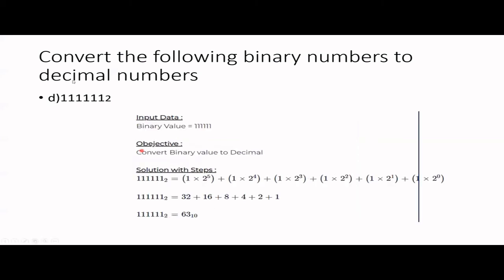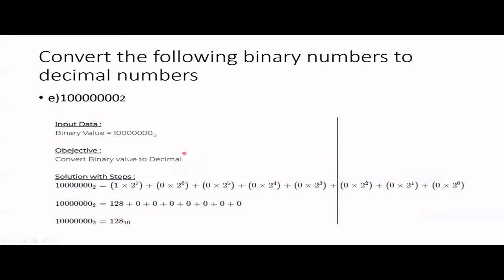Next: 111111 — all ones, no zeros, no luck. Weighting factors 2⁰ through 2⁵, so all place values apply: 1, 2, 4, 8, 16, 32. These are the binary place values. Add all of them: 1 + 2 + 4 + 8 + 16 + 32 = 63. Next: 10000000 — all zeros except the leading 1. Write 2⁰ through 2⁷; all are zero except 2⁷. We already calculated: 2⁷ = 128, so the answer is 128.